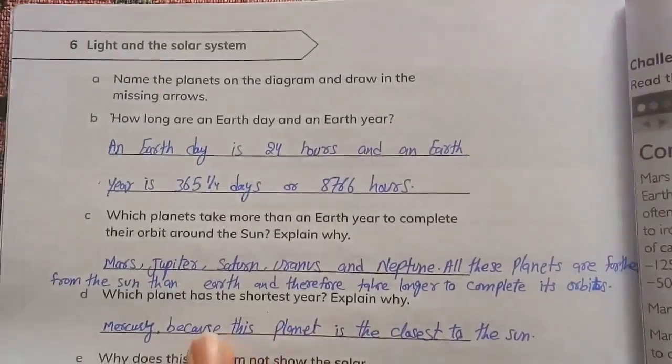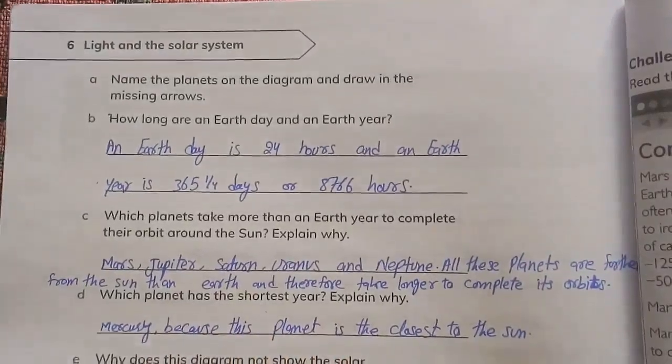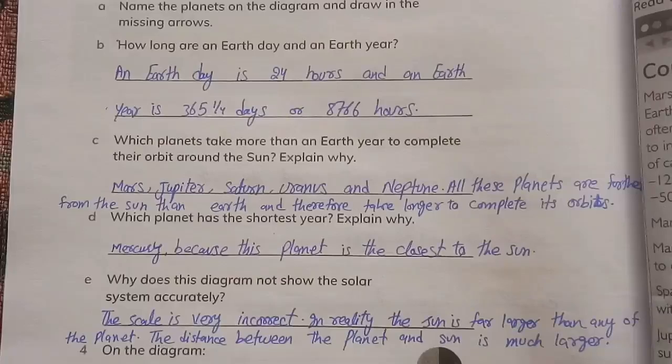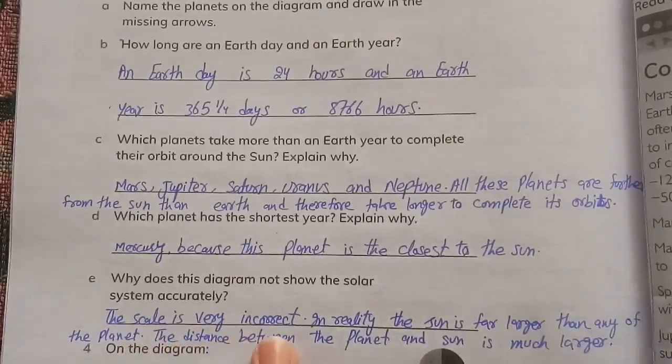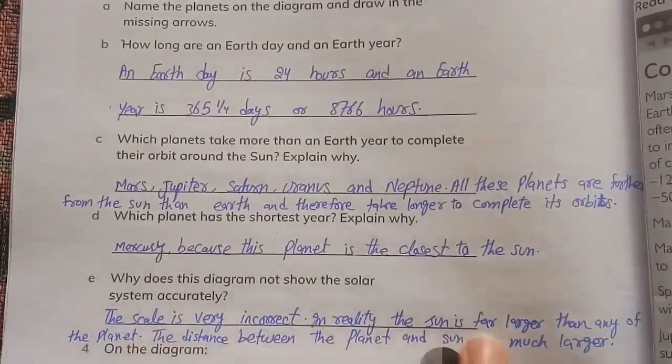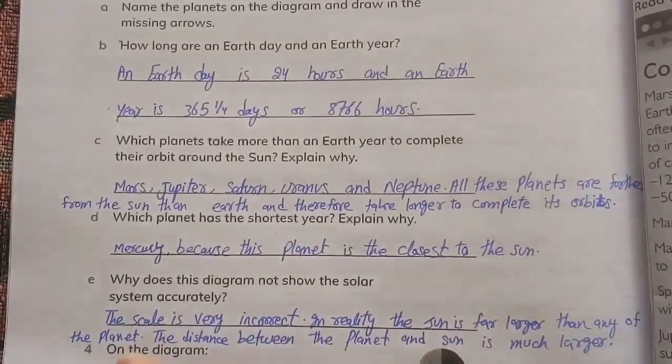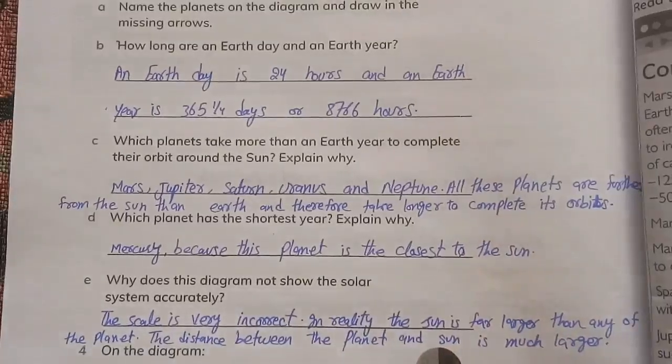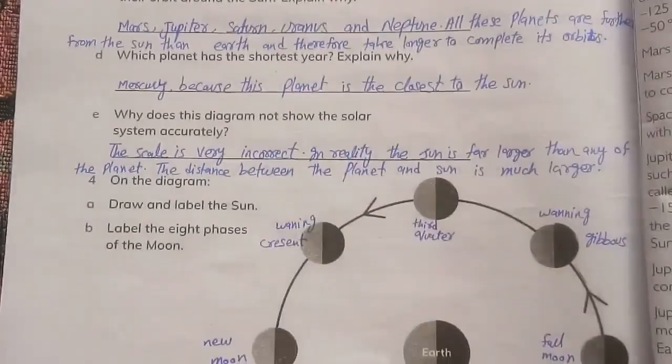Why does this diagram not show the solar system accurately? The scale is very incorrect. In reality, the Sun is far larger than any of the planets. The distance between the planets and the Sun is much larger. So this is the answer.